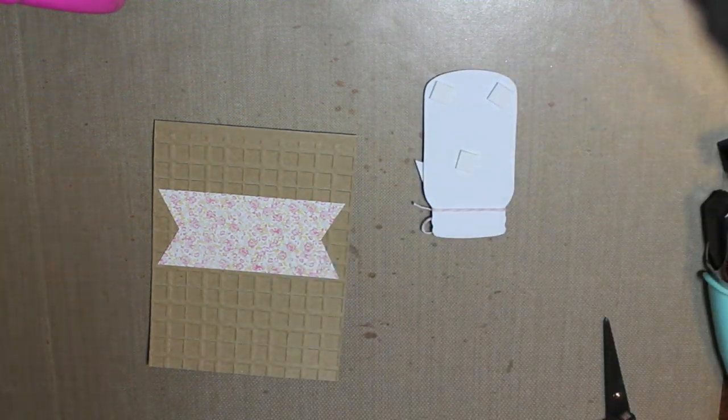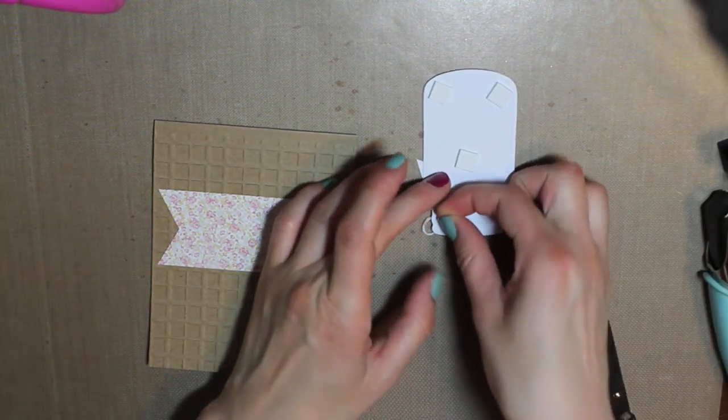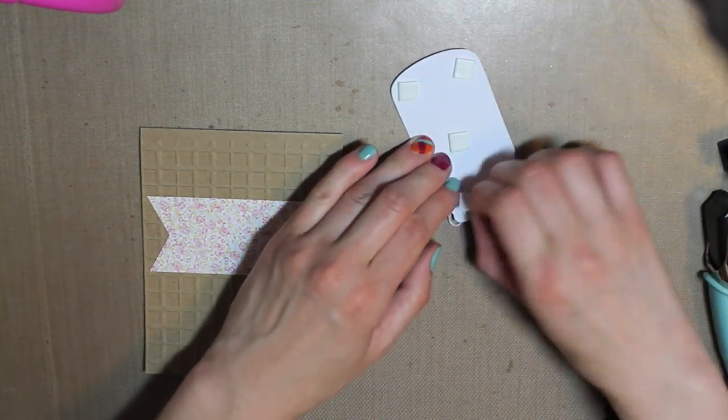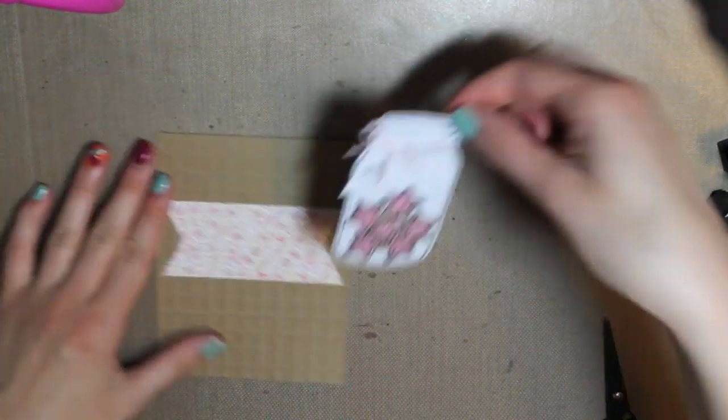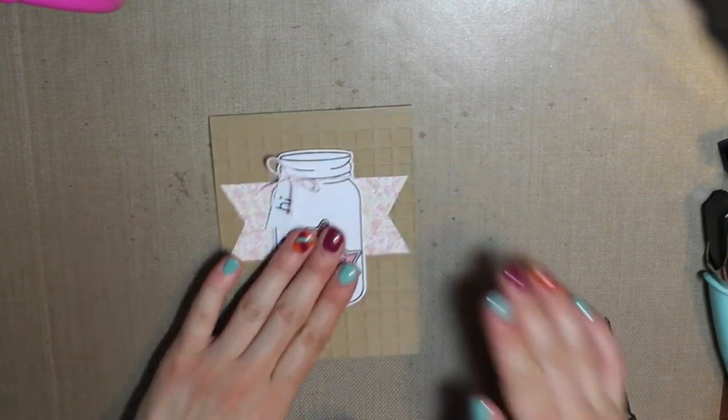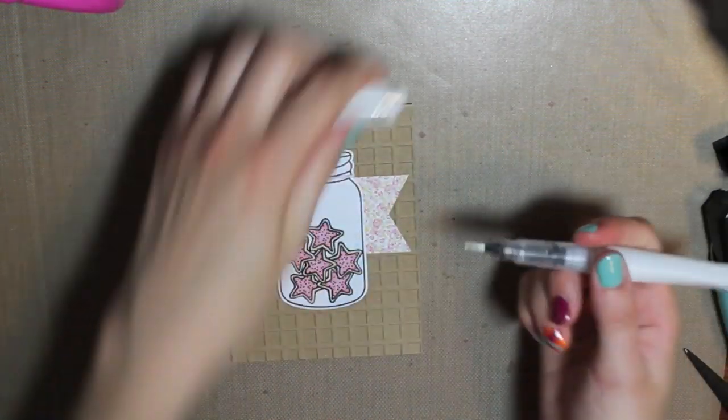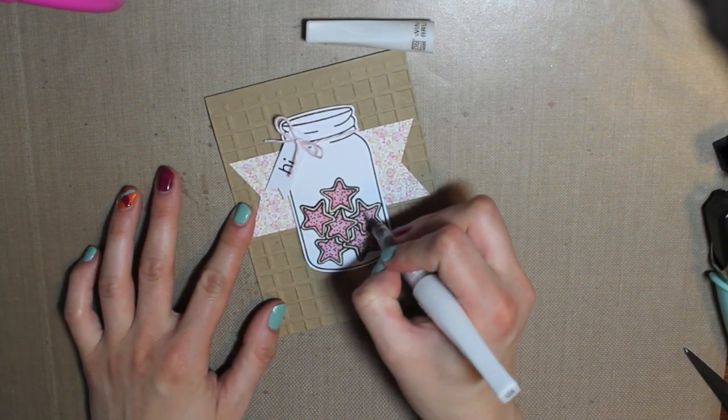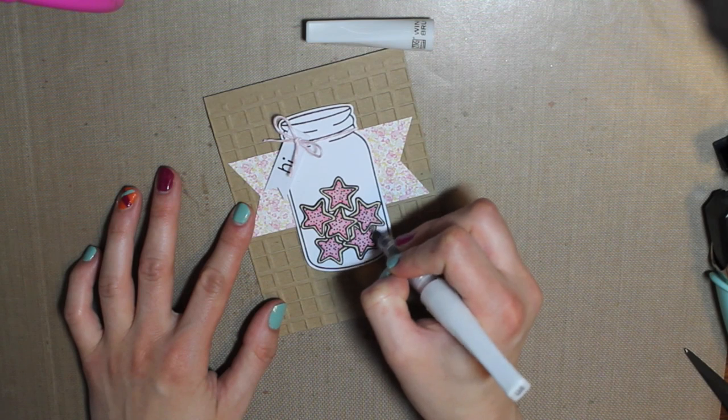Now I'm going to use 3D foam squares to attach my mason jar to the card. I have three bigger ones on the bottom and then two small little adhesive squares. And then I'm going to use my clear Wink of Stella pen just to apply a little bit of glitter to each of the cookies in the jar.